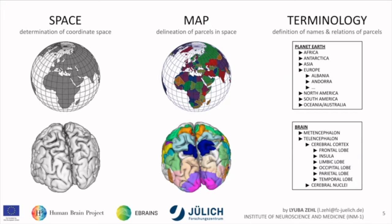The last thing is we have to name and define what we actually delineated. We have to give it a name, a definition, and a relation. This terminology can be done for countries on the Earth but also for the brain. If you come from an anatomy background, there is a lot of discussion about how to name things and what is equivalent in namings. So these three things need to be in place.